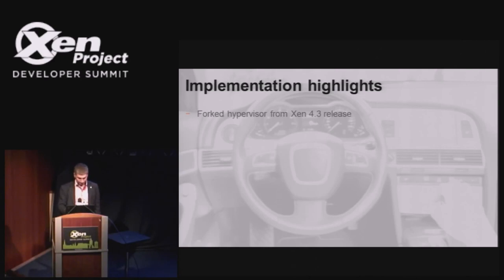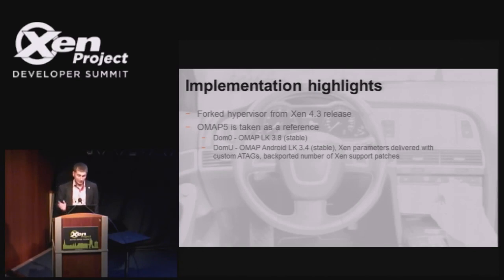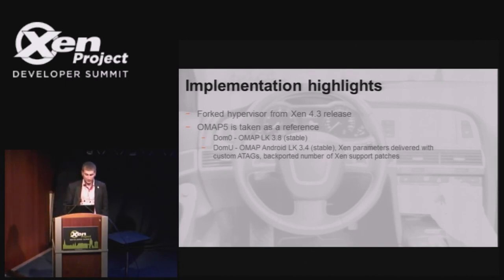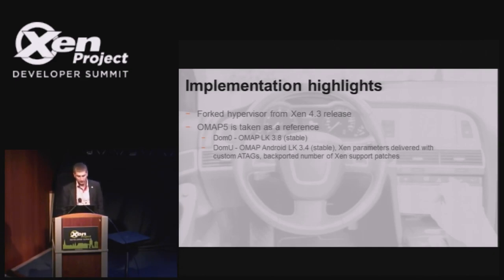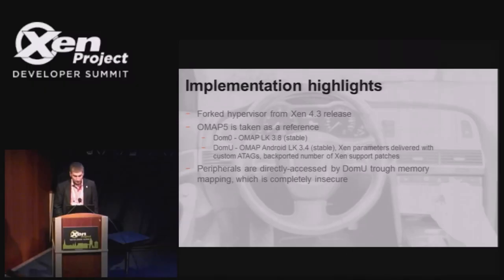For our implementation highlights: we started with Xen 4.3, took OMAP5 with Linux kernel 3.8 as DOM 0, and had to stick with 3.4 in DOM U. We backported a few things like ATAGs and some Xen support patches to 3.4. We decided not to go with para-virtualization — we wanted peripherals to be directly accessed by DOM U through memory mapping. This is insecure in the sense that from DOM U you can program your peripheral's DMA to corrupt DOM 0 memory, but we are adding SMMU support to cover that.